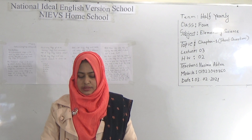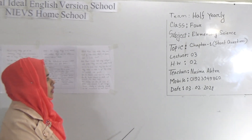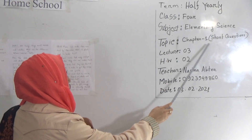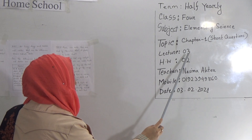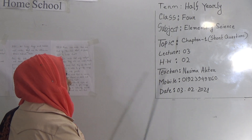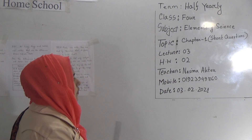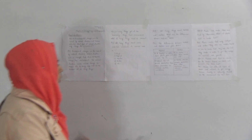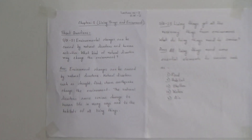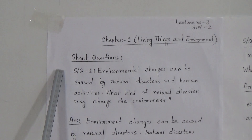Today our topic is short questions of chapter 1. Our today's topic is chapter 1 short questions and answers. This is lecture number 3, and I will give you SW. Our today's SW will be 2 number SW. Dear students, let's start today's class. I have written here 5 short questions and answers.